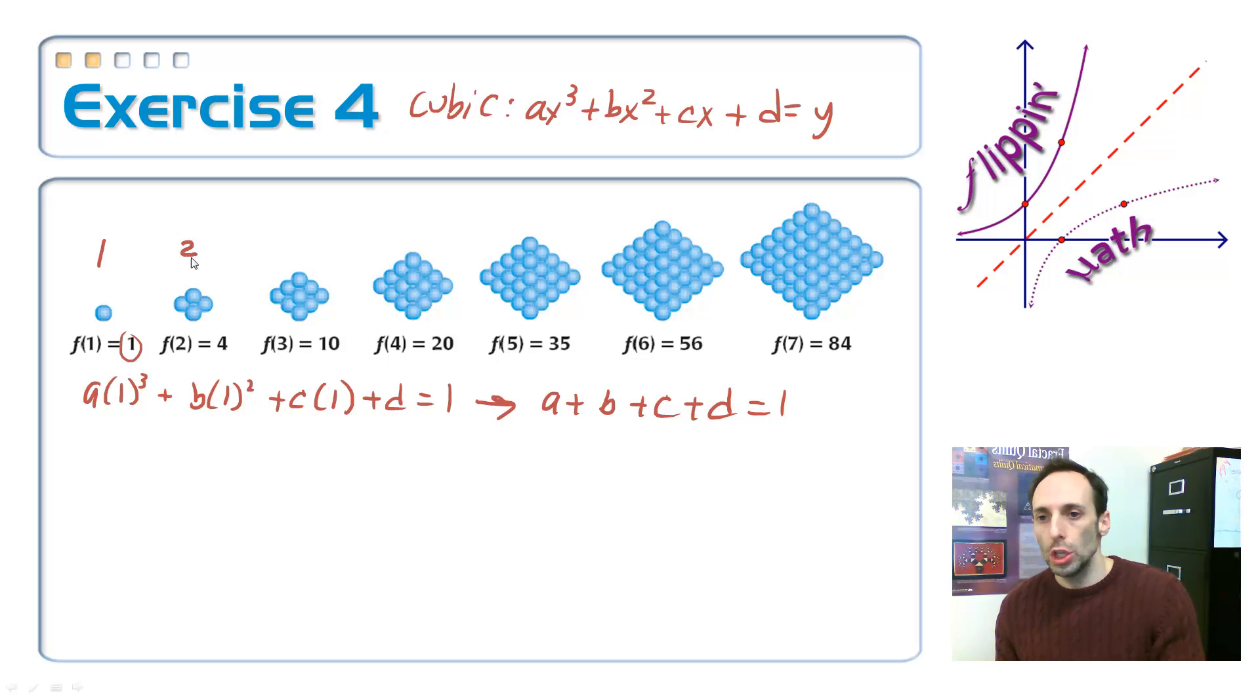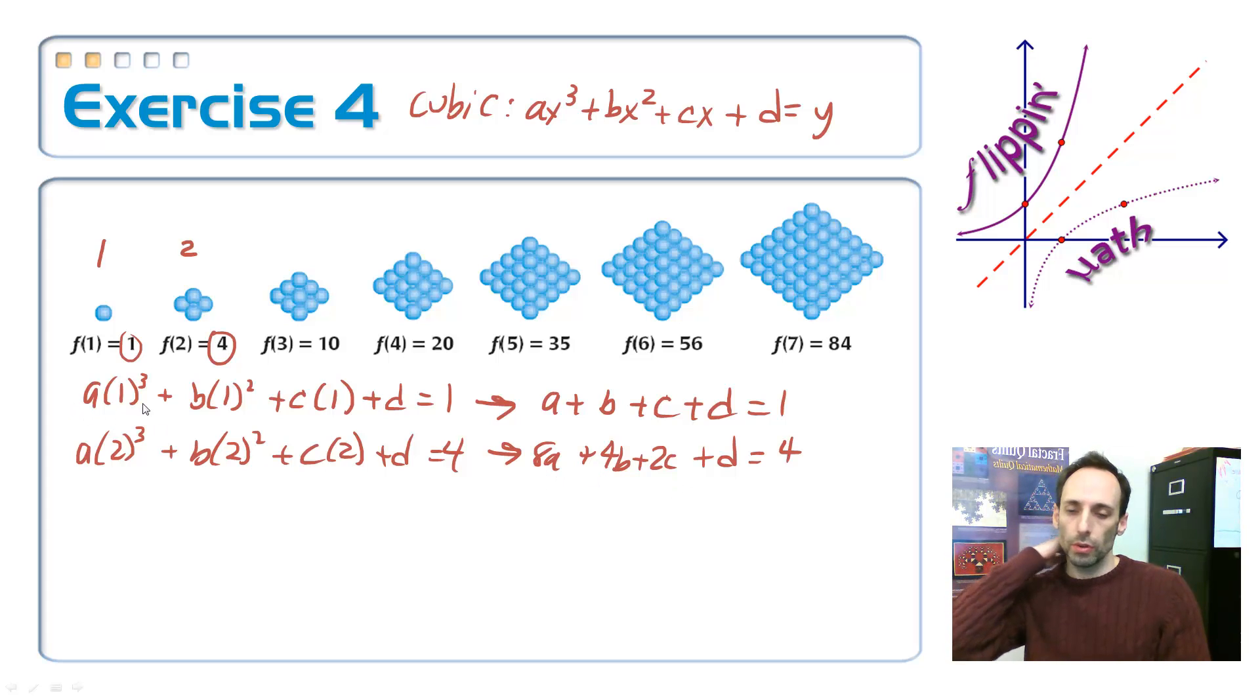For the next equation, I'm going to input a 2 and what I should get out for y is a 4. So a times 2 cubed plus b times 2 squared, c times 2 plus d is equal to 4. 2 cubed is 8, 8a, plus 2 squared 4, 4b, plus 2c plus d is equal to 4. 2 cubed is 8, 2 squared is 4, and 2 to the first power is 2, and then I have my d.